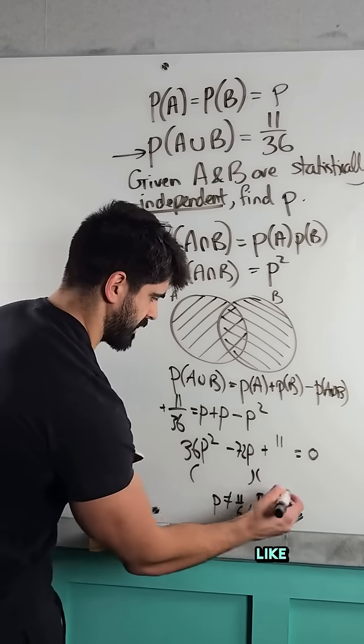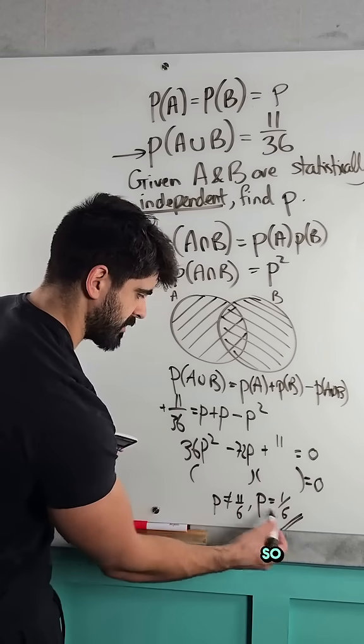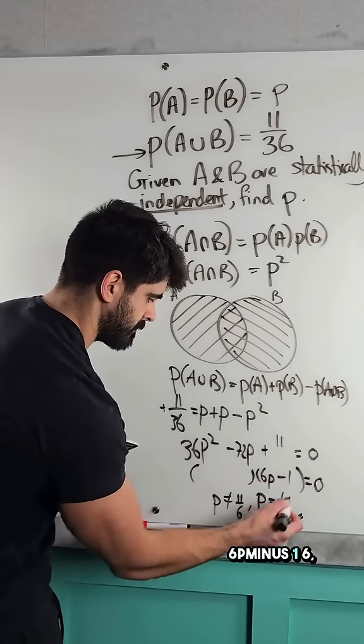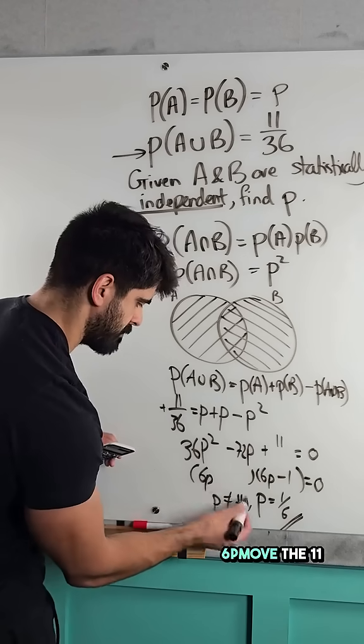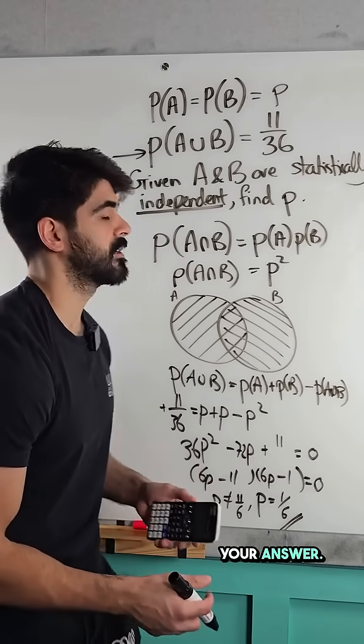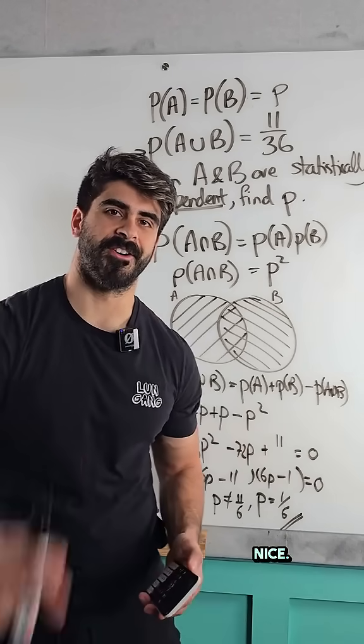Remember in the exam, pretend like you factorized. So 6P minus 1, 6P, move the 11 over. And that's your answer. Not so bad. Nice.